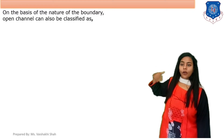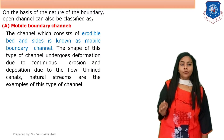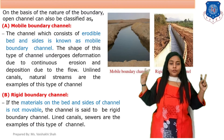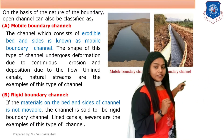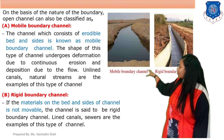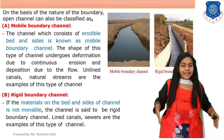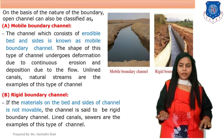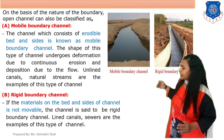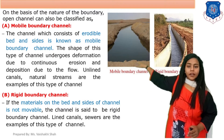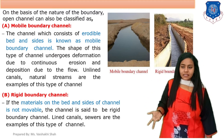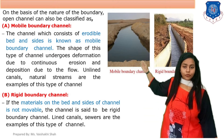On the basis of nature of the boundary, open channels are also classified as mobile boundary channels and rigid boundary channels. In a mobile boundary channel, the channel consists of erodible bed and sides. This shape of channel undergoes deformation due to continuous erosion or flooding. Unlined canals and natural streams are examples of mobile boundary channels.